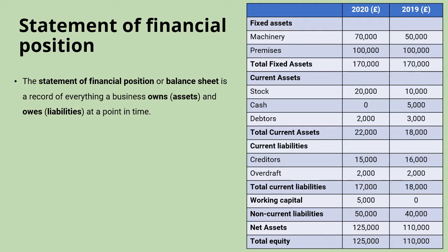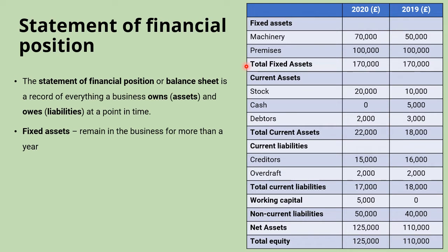We've got an example here which we can work through section by section. The fixed assets appear right at the top. They are things that we own, but the fixed part means they tend to stay in the business for more than a year. Examples include machinery used in the production process and buildings or premises where the business operates. These are added together to get the total fixed assets.